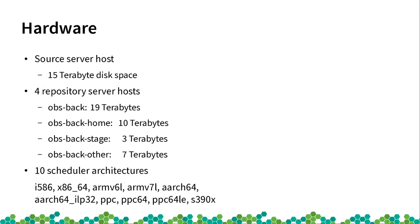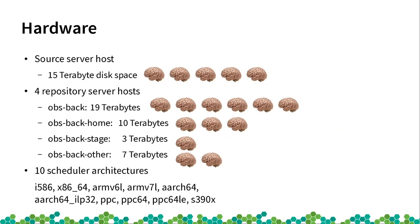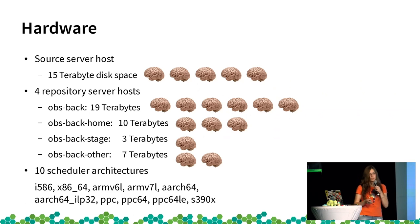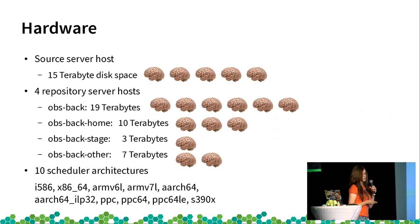Now let's talk about the hardware we have for the external instance. I read some days ago that the human brain can store between one and ten terabytes. So I will tell you in human brains so you can remember it better. We have 15 terabytes for the source server host — around five human brains. For the four repository server hosts: the first one for distributions has 19 terabytes, around six human brains. The home project is 10 terabytes, around three human brains. The staging for testing and open QA is only around one human brain. And then the rest is seven terabytes, around two human brains.